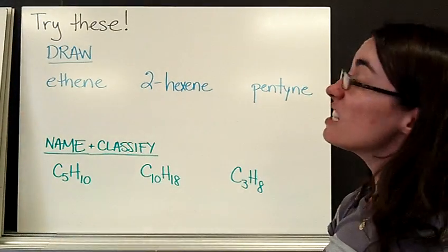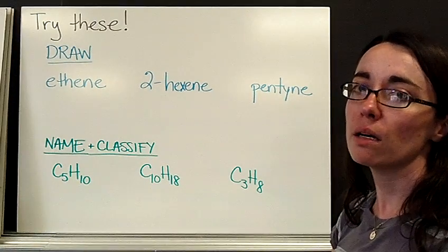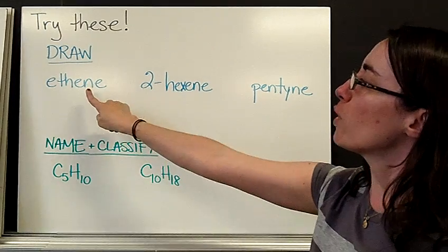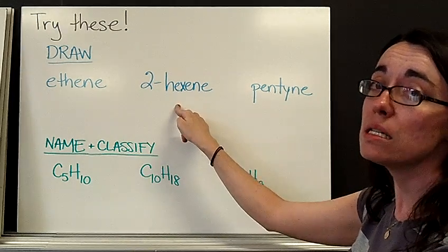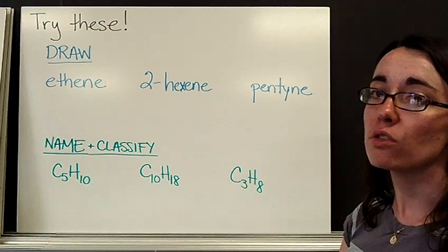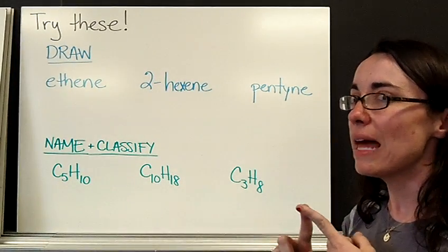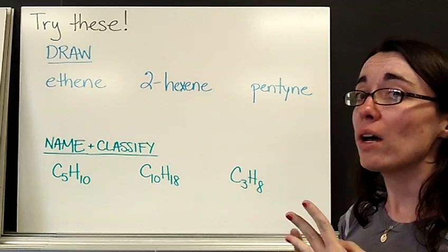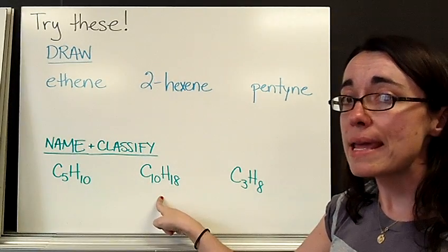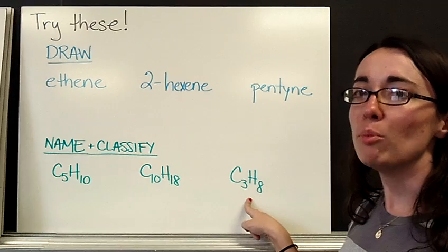All right. I think you're ready. Let's try these. I would like you guys to copy down these problems on a piece of paper and bring it with you to class tomorrow. I would like you to draw structures, including all the C's and the little bonds for ethene, another structure for two hexene, and a structure for pentyne. Please be very specific and clear with your drawings. The next thing I need you to do is name and classify. When I say classify, I need you to tell me, is it an alkane? Is it an alkene? Or is it an alkyne? Which family does it belong to? So you've got C5H10, C10H18, and finally, C3H8. Good luck and bring me what you got tomorrow.